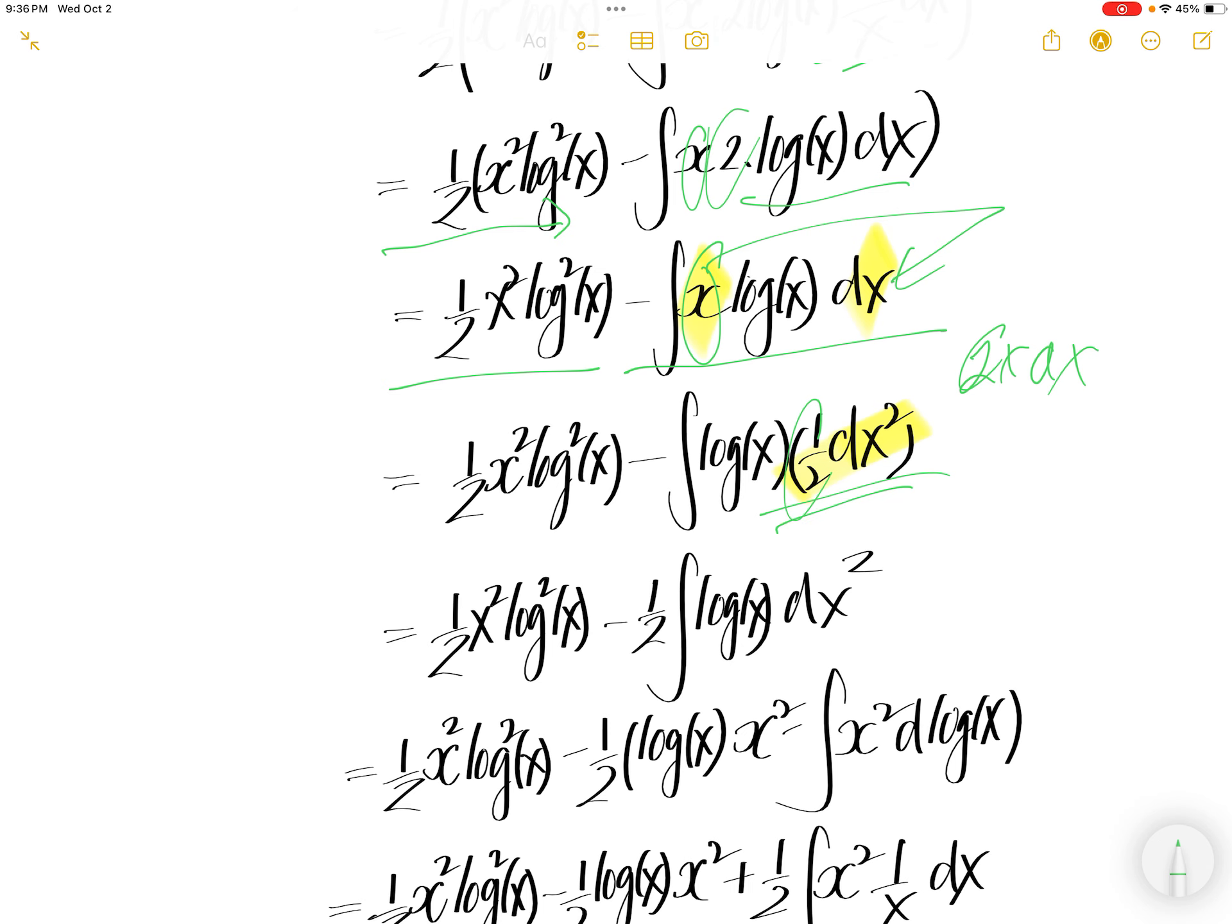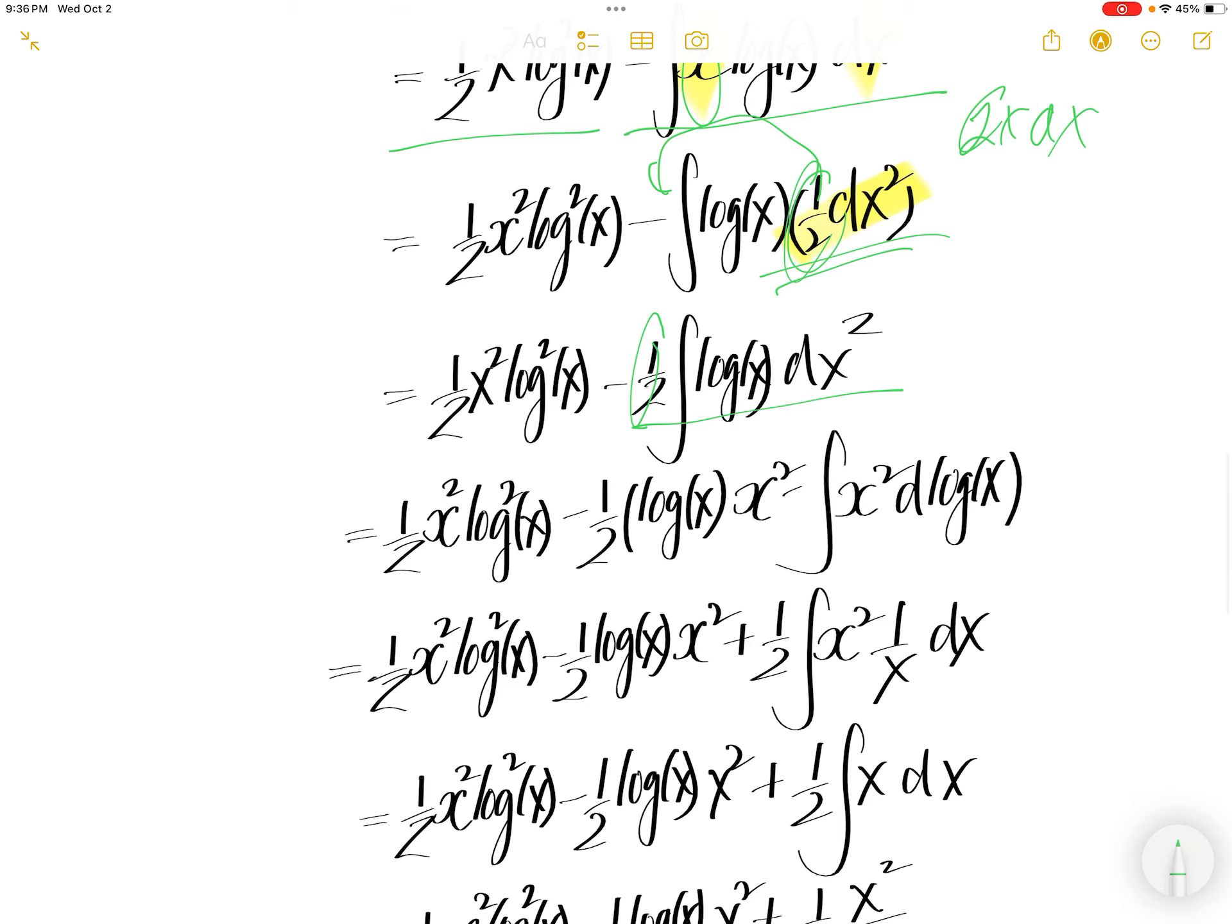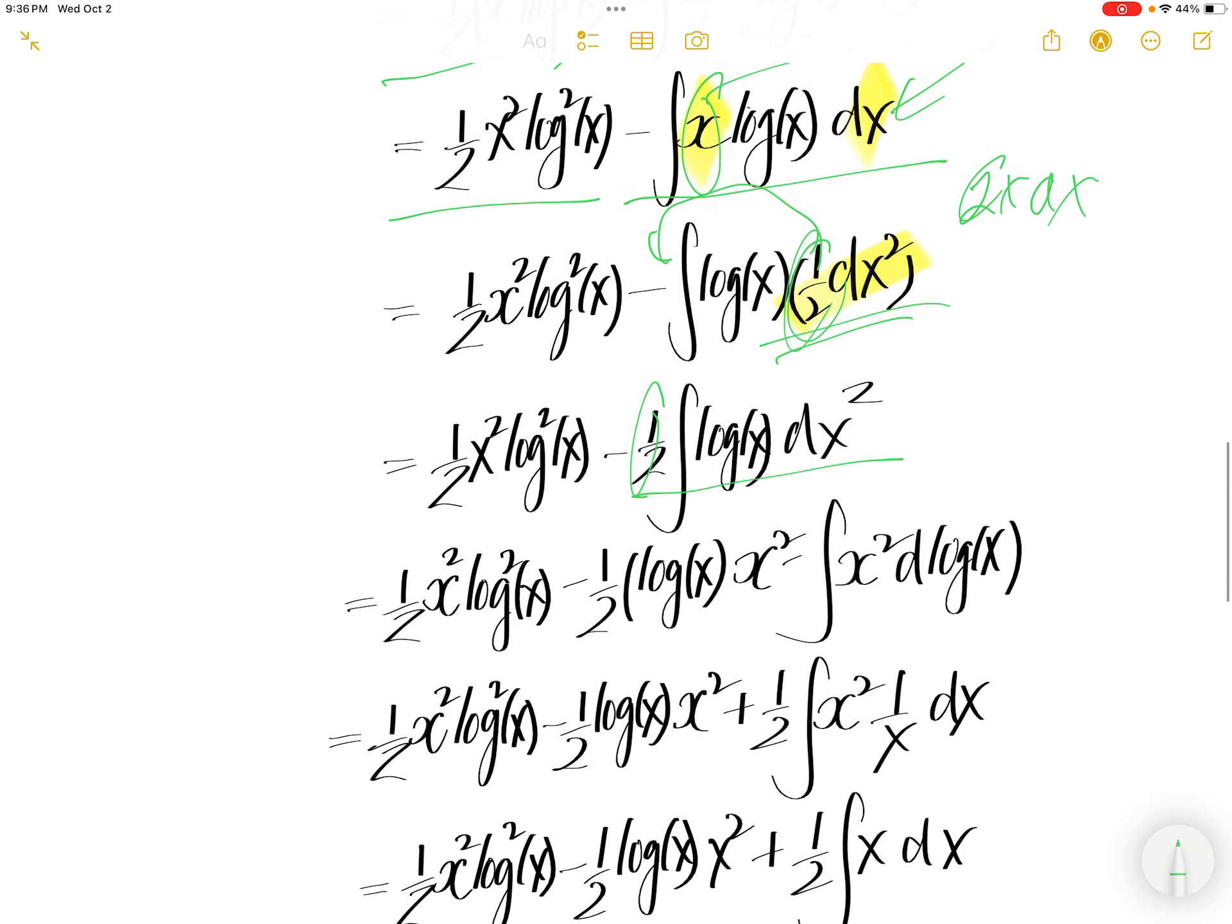So basically, the yellow one is the same thing as this. Half, out over here, and then this. Now we are going to play again the same game. Now, this is u, this is v. Integral of u dv is uv minus integral v du applying the IBP.